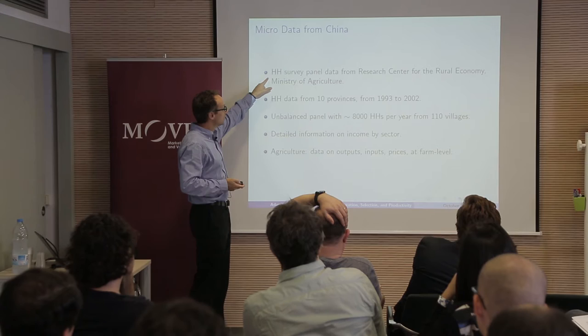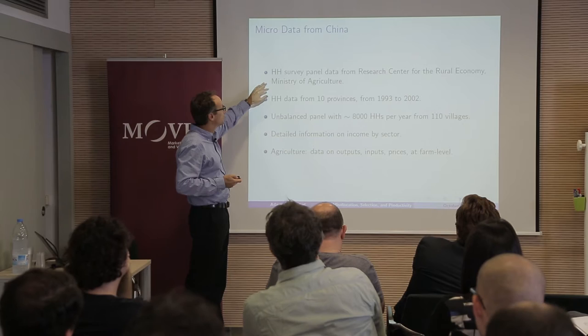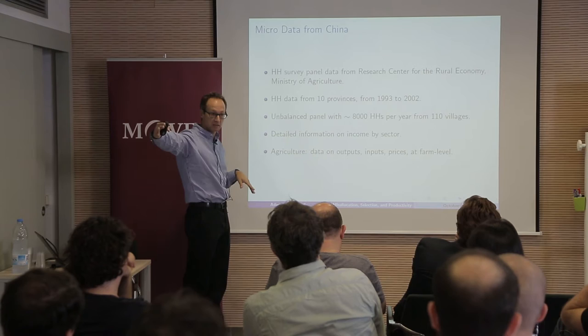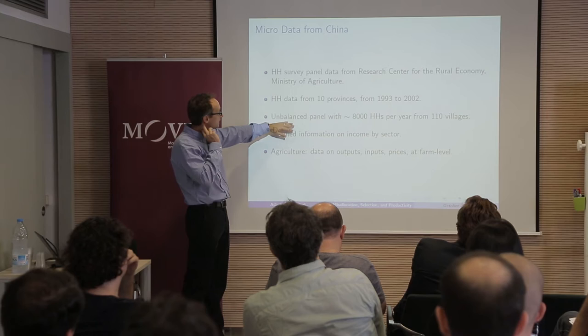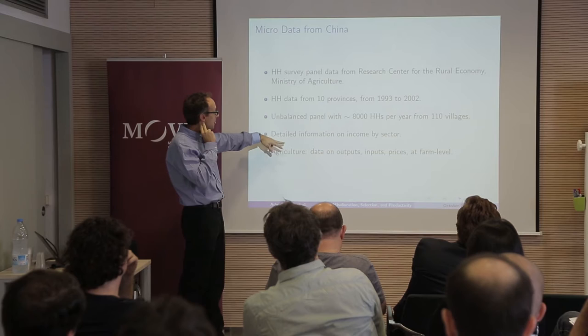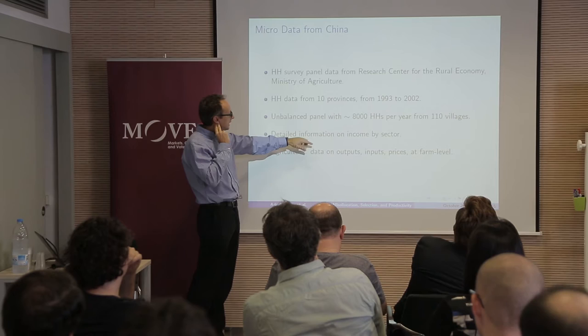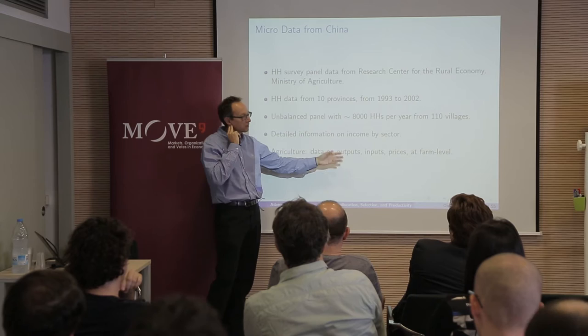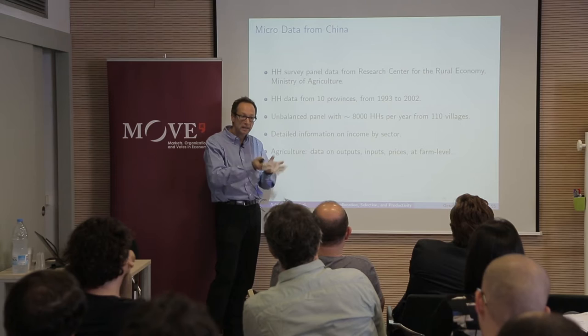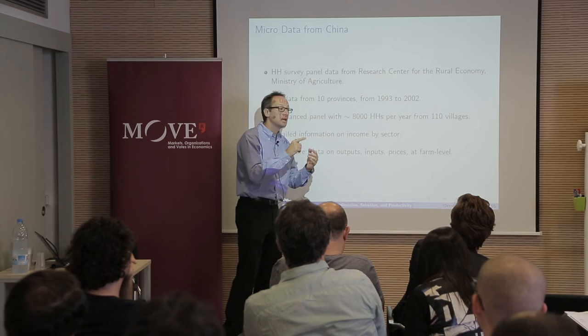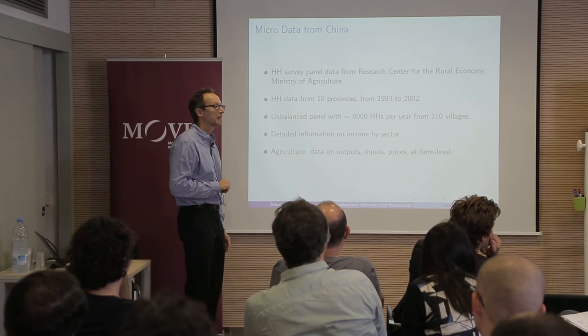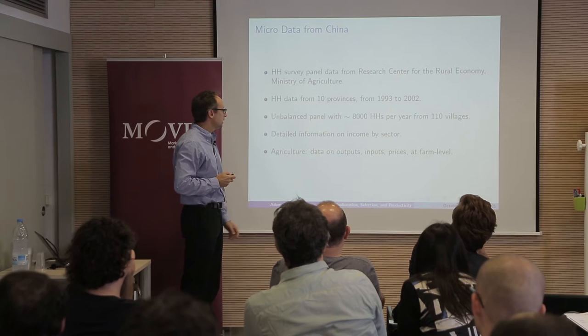The data comes from a survey that has been used in many studies of the Chinese economy. It has 10 provinces from 1993 to 2002. It's a balanced panel with about a thousand households from 110 villages — almost 80 households per village. We have detailed information on income by sector, and for agriculture we have detailed information on output, inputs, and prices, so we can do value-added calculations and measure TFP. Capital includes different types like tractors, as well as intermediate inputs like fertilizer.